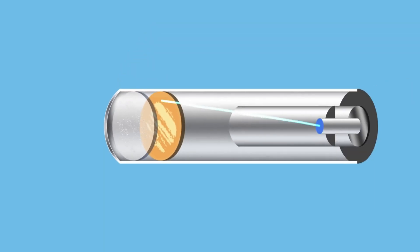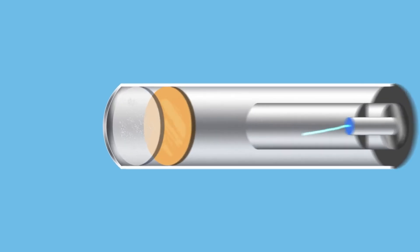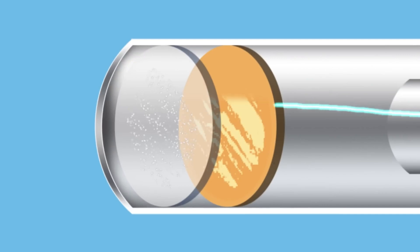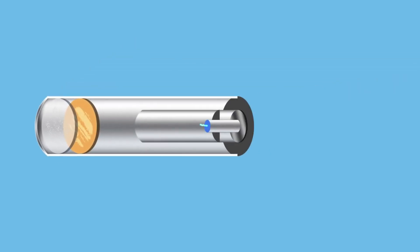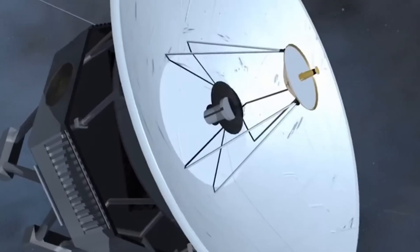After this, a cathode at the back of the tube fires electrons towards the target plate to scan the image. These electrons reach the target plate and fill in the gaps, creating an electric current. This signal contains the image data and can now be transmitted back to Earth.